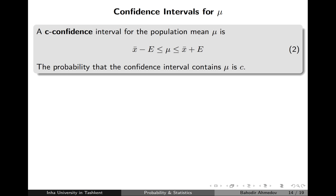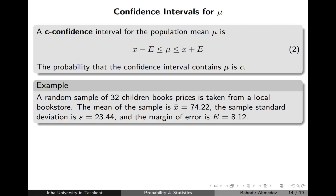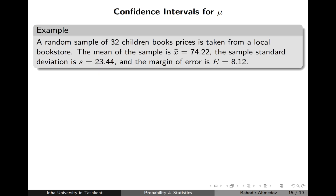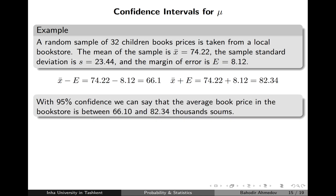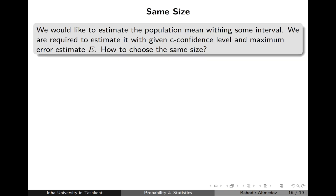Using the error margin we can construct the confidence interval. The 95% confidence interval for the population mean is x-bar minus e to x-bar plus e. In our example, the sample average is 74 and the error margin is 8.12, so we subtract and add 8.12 to get the bounds of the interval. As a conclusion, with 95% confidence we can say the average price in the whole store is between $66.10 and $82.74.